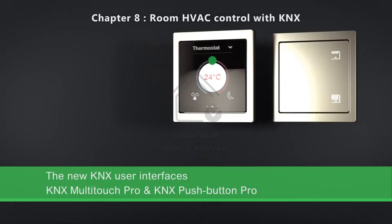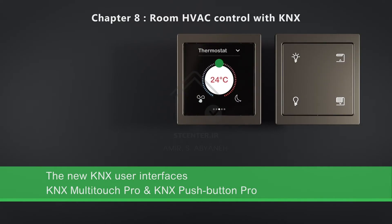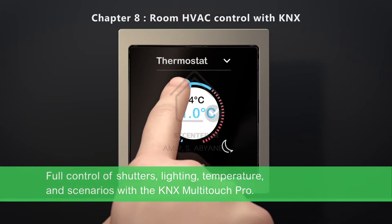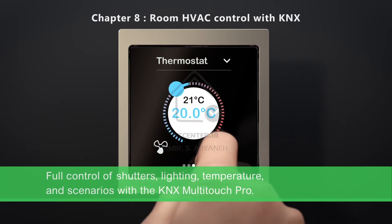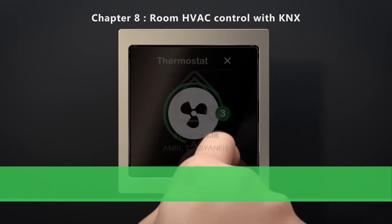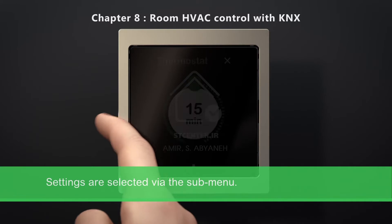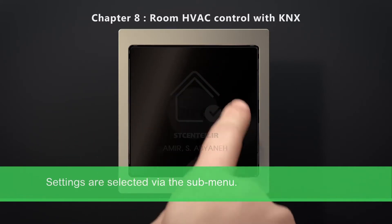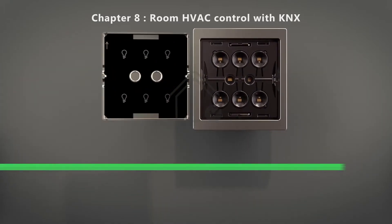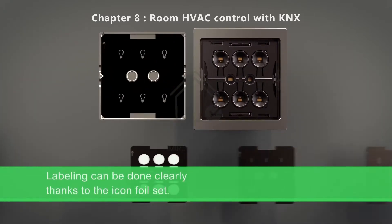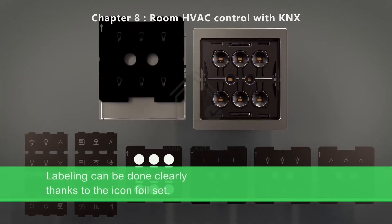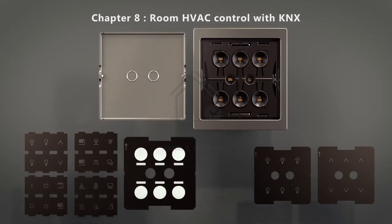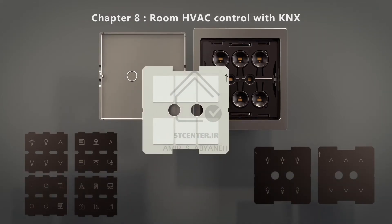One of the important chapters is room HVAC control — heat, ventilation, and air conditioning control — based on KNX. You are going to learn how to implement the room thermostat with the fan coil, underfloor heating, and radiator. We will go deeper into these examples in the HVAC course as well.